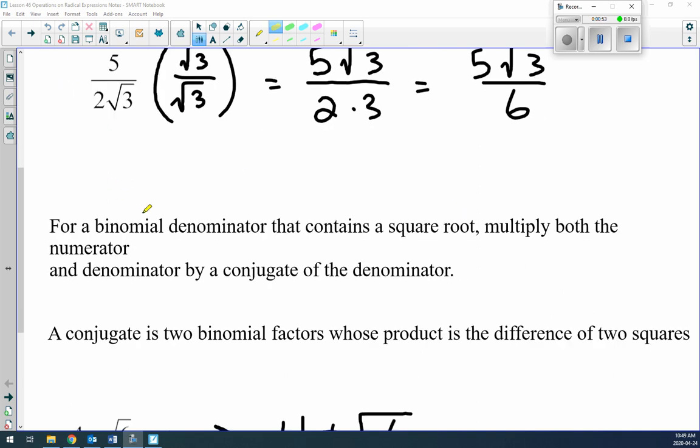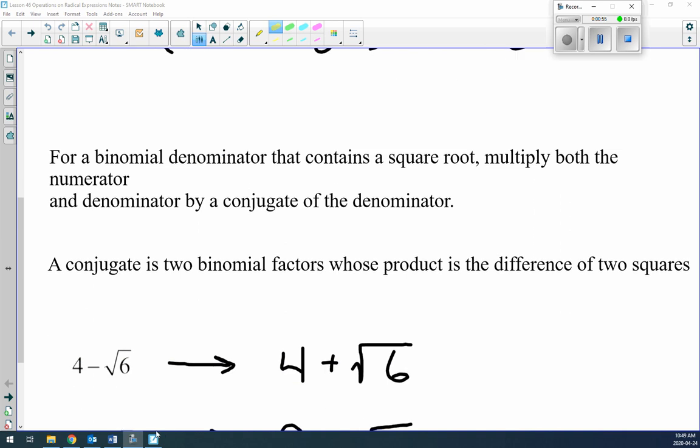Now, these are monomials. When you deal with a binomial—remember, there's two pieces to it, and they're separated by either addition or subtraction—what you have to do is multiply both the numerator and the denominator by something called the conjugate.